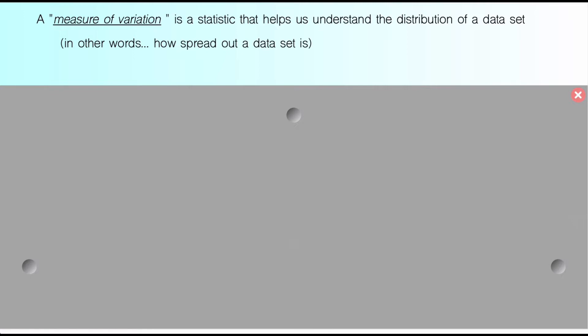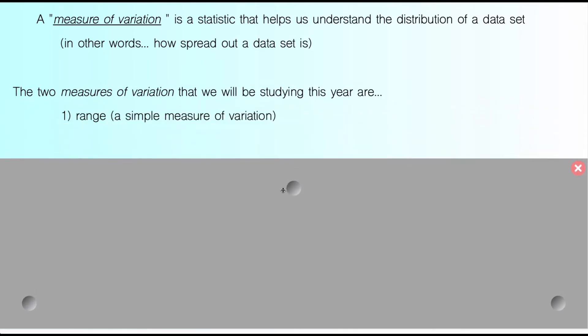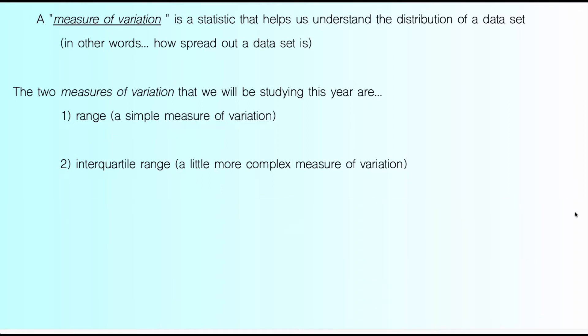What is a measure of variation? A measure of variation is a statistic that helps us understand how spread out a set of data is. A fancier way of saying that is it helps us understand the distribution of the data. This is valuable because it tells us: are all of our numbers close together, or do we have a big range? The main two we're going to study are range, which is fairly simple, and the interquartile range, also known as the IQR — that one is a bit more complex, so that's where you'll probably need to pause and rewind.